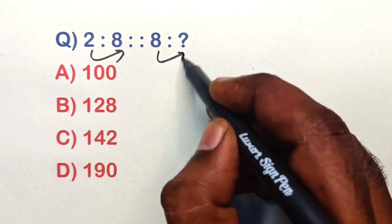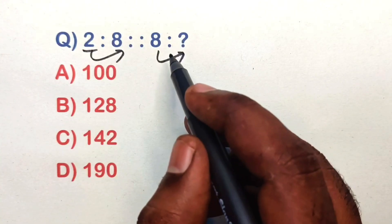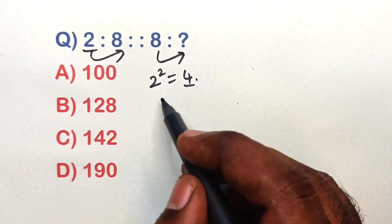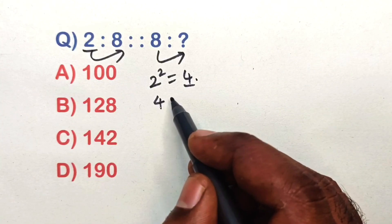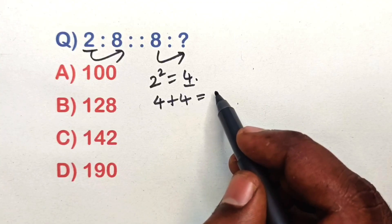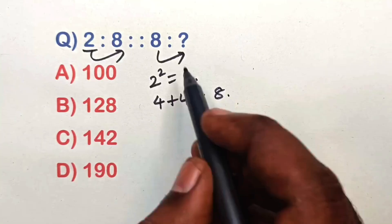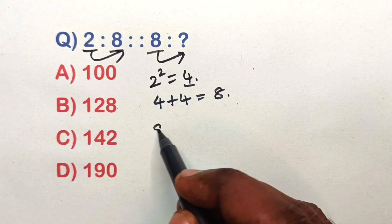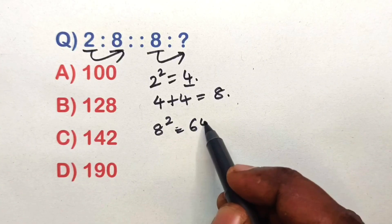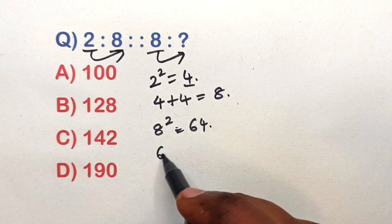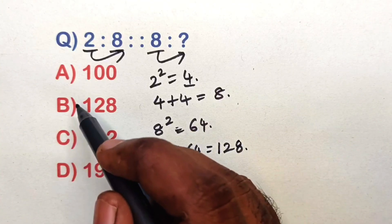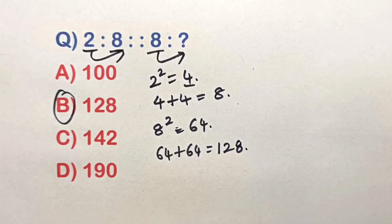Find the relation in this analogy question. Take 2: 2 squared is 4. Write 5 and add — 4 plus 4 is 8. Same way, take 8: 8 squared is 64. Write 5 and add — 64 plus 64 is 128. So option D is the correct answer.